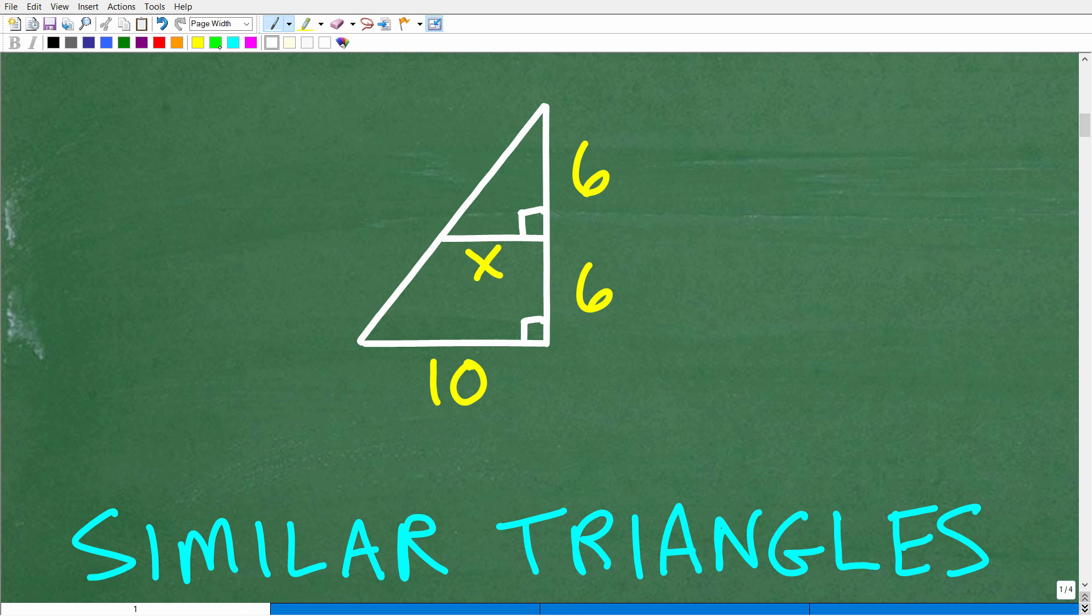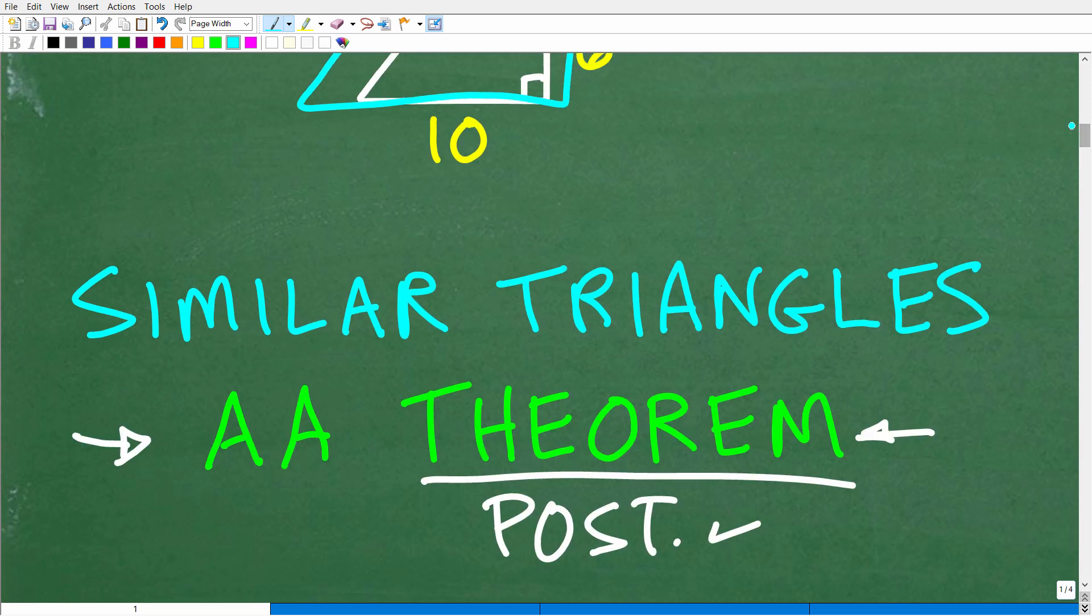Right here, we have similar triangles. If you notice our little figure, we have a triangle right here. There's one triangle and then we have this other bigger triangle. And these two triangles are similar triangles. We need to understand that, and then we need to understand this angle angle theorem.